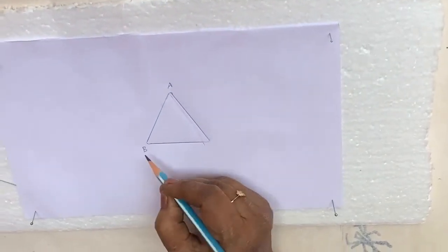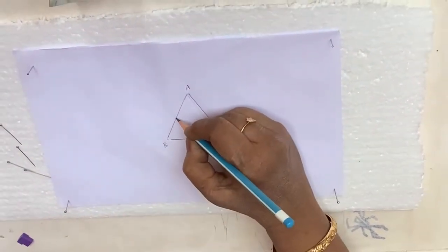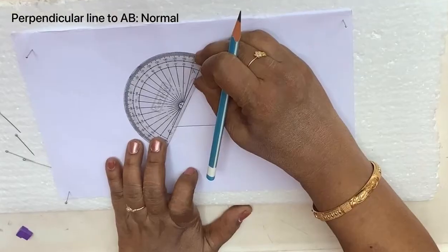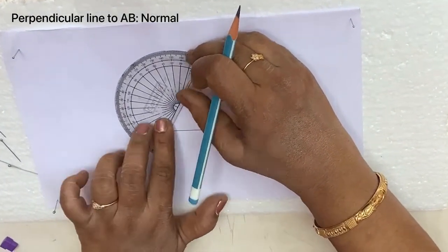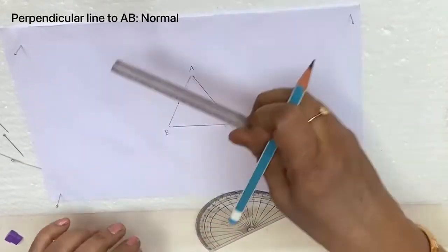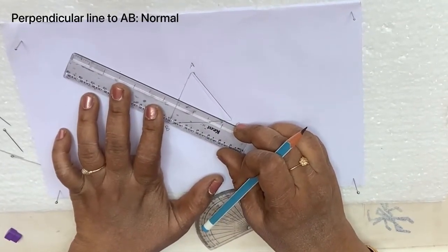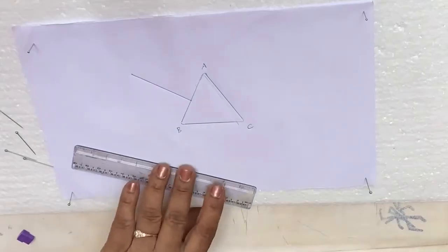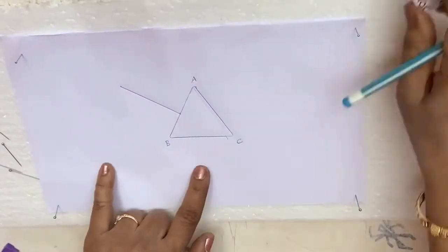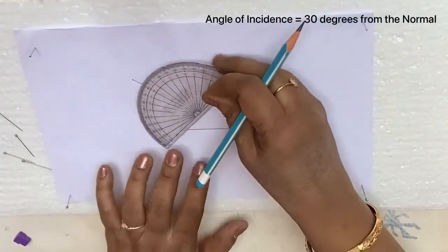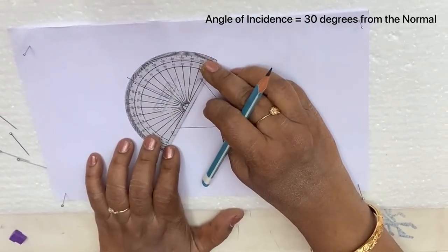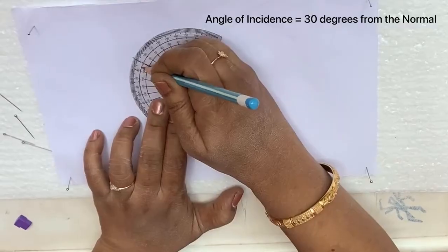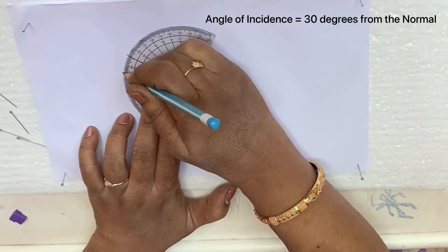Let us name the prism A, B, C. Take any point here and draw one perpendicular line — perpendicular means exactly 90 degrees. Take the perpendicular line and join this. This is the normal. With respect to the normal, let us have one angle of incidence. Let us take starting 30 degrees. With respect to the normal it is 90, so 10, 20, 30.